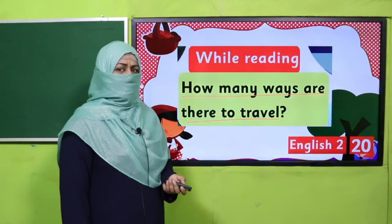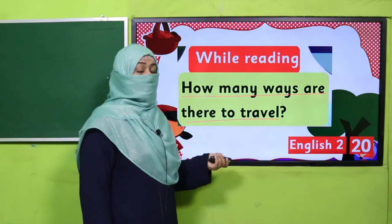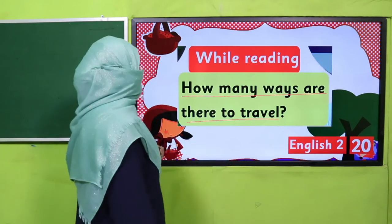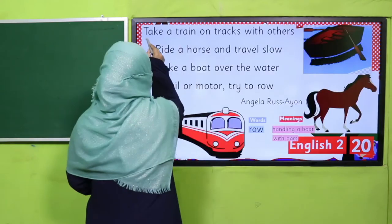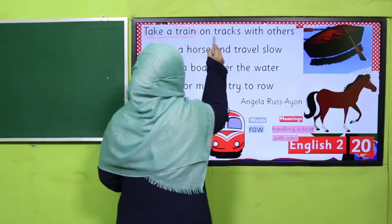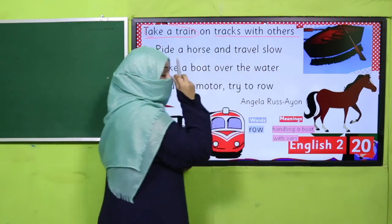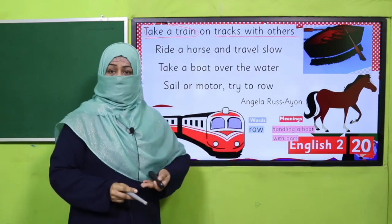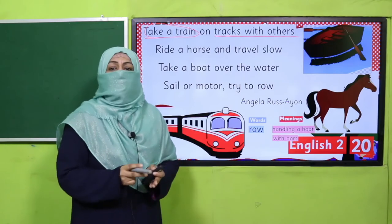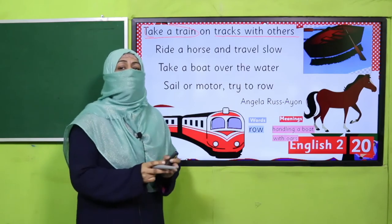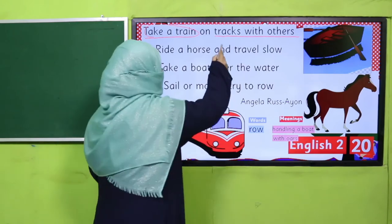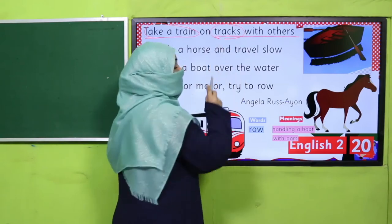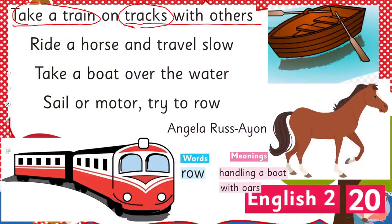Did you mention all of them? There are a few more. Take a train on tracks with others — a train moves on special tracks, not on the road. Have you seen the special tracks for trains?